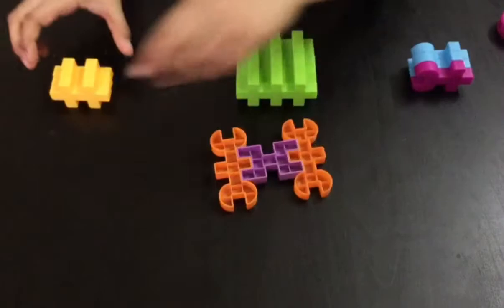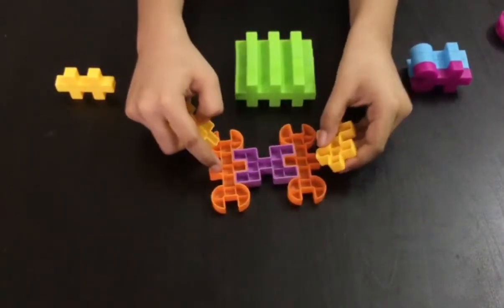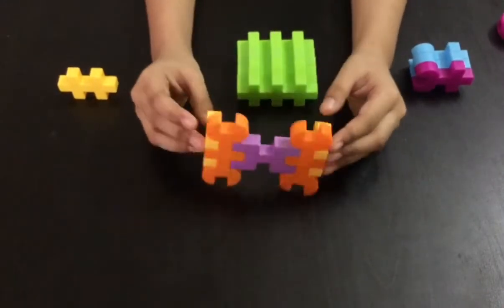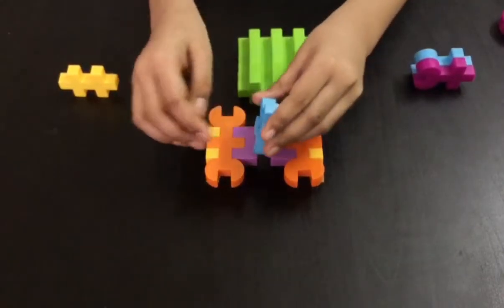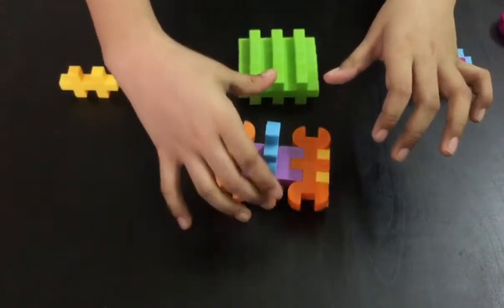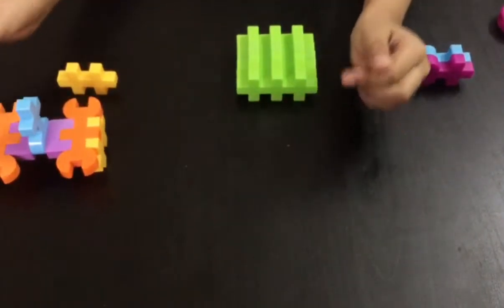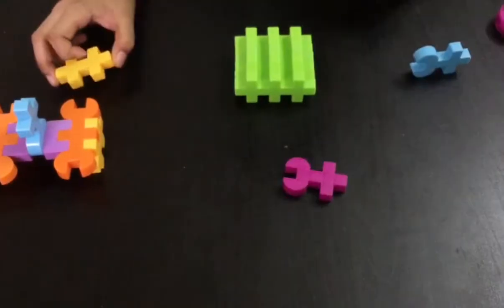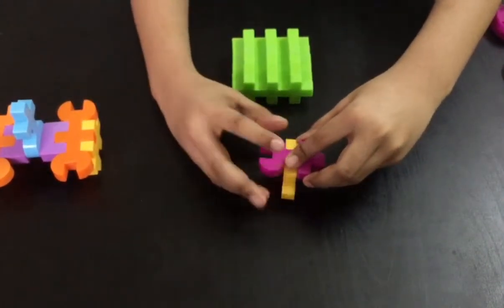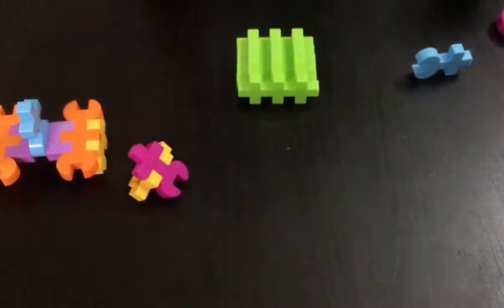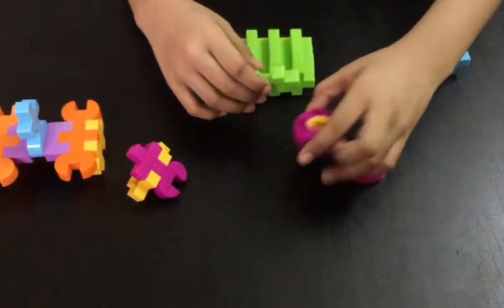Take two yellow blocks and attach them on these bumps. Now take this blue block and attach it over here. There you go. Let me show you how to make the front side. We will need one dark pink block and one yellow block. Attach them together like this.